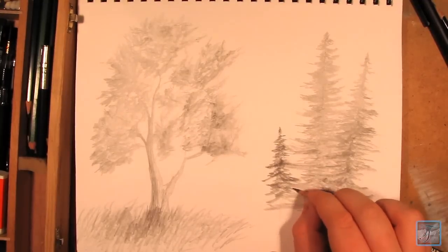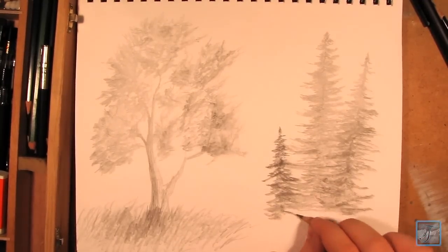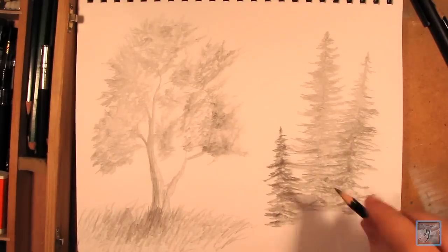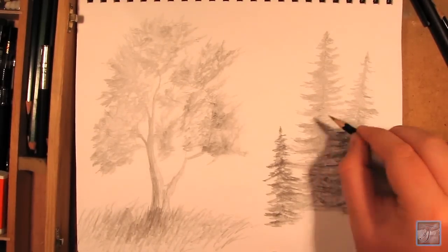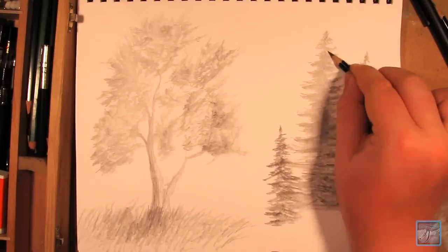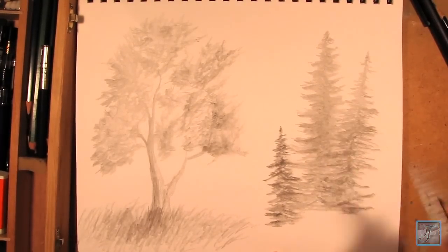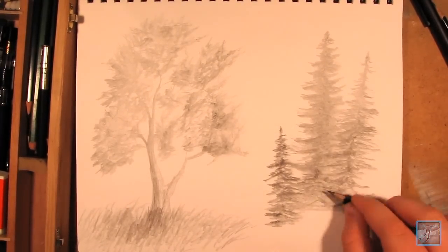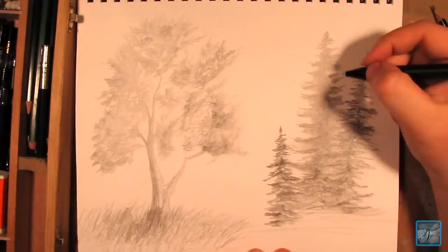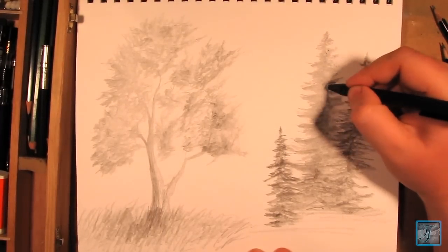Then you can just take a 4B pencil or something darker and darken in one side of the tree. Take an eraser and erase out the other side of the tree to create some highlights. And that's pretty much it—that's how I draw these trees.